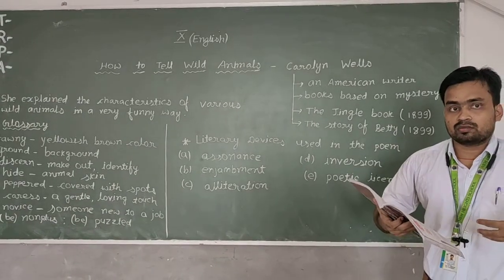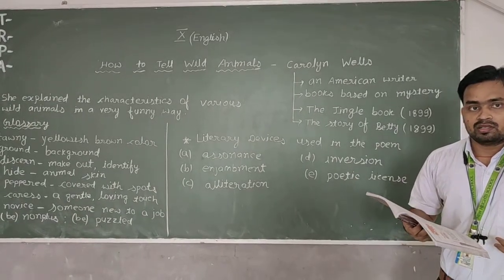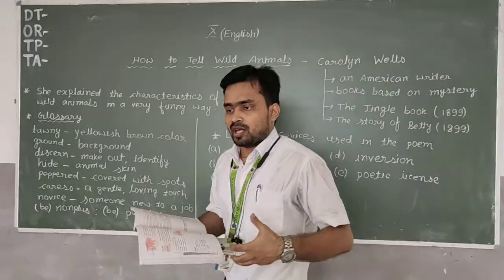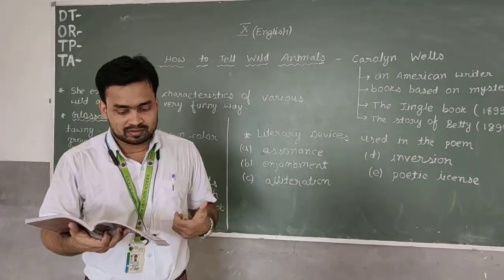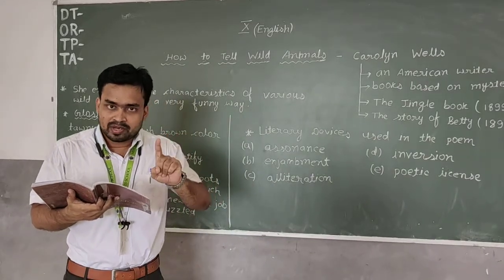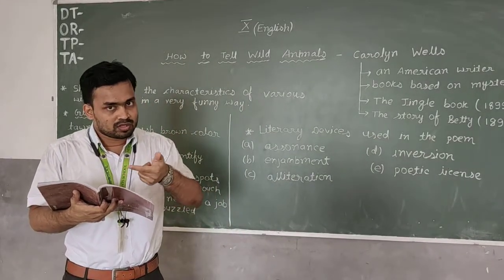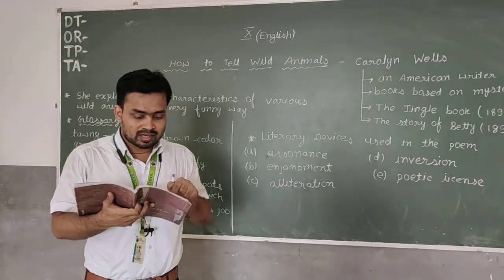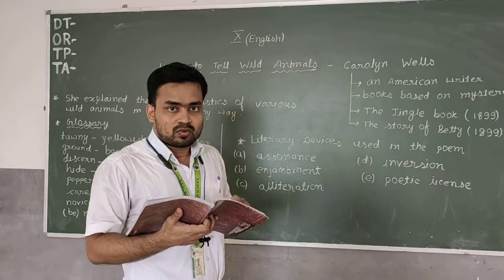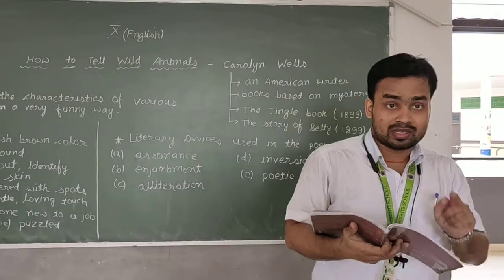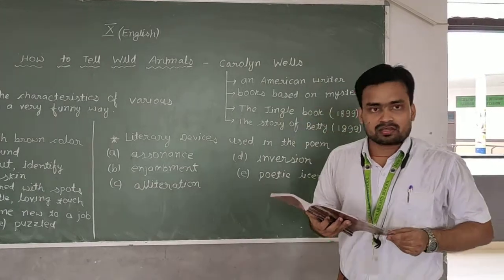So when you are hugged by an animal that hugs you very tightly, that presses you very tightly, you can find out that the animal is a bear. Again, the very first and the second line, enjambment is used. You can see the line continues from the first to the second. Assonance is used in the second line of this stanza, repetition of E sound. Alliteration is used in the third line.